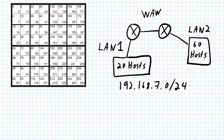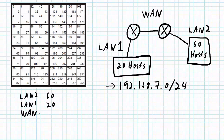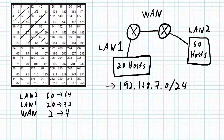This network has two LANs with a given number of hosts and a WAN connecting two routers, starting with network 192.168.7.0/24. Ordering from largest to smallest: LAN2 has 60 hosts, LAN1 has 20 hosts, and the WAN has only two. For 60 hosts I need a network size of 64; for 20 hosts, a size of 32; and for two hosts, a network size of 4 — the smallest possible. So the block of 64 takes addresses 0 to 63, the next 32 addresses cover 64 to 95, and the WAN block requires only a size of 4.